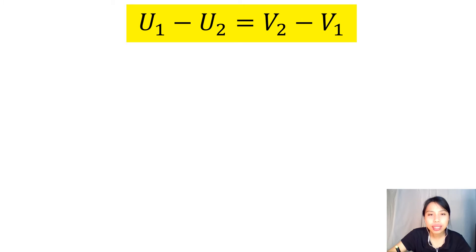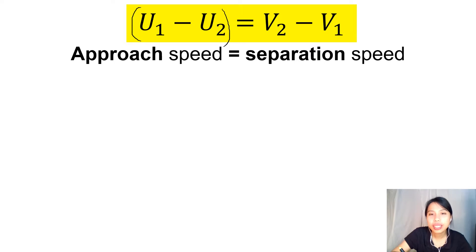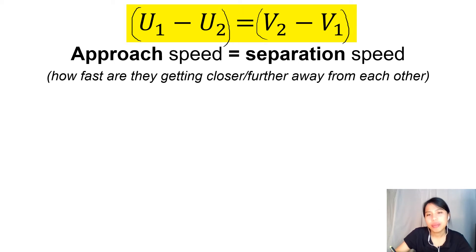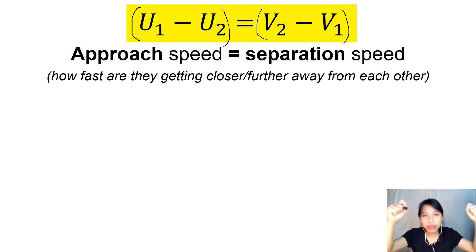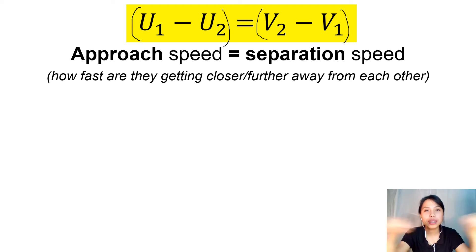What does this term mean — U1, U2 and all that? Basically, you are finding the approach speed before. The approach speed can be calculated with U1 minus U2, and the separation speed is V2 minus V1. Approach means how fast two objects are getting closer to each other; separation means how fast they are getting away from each other.